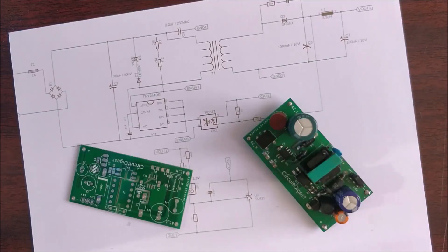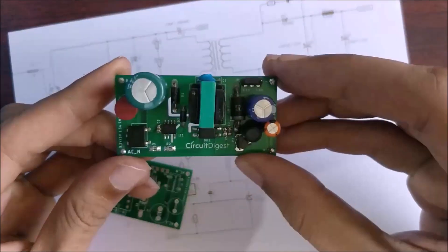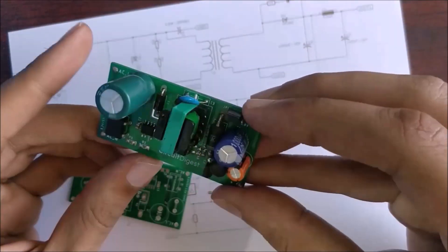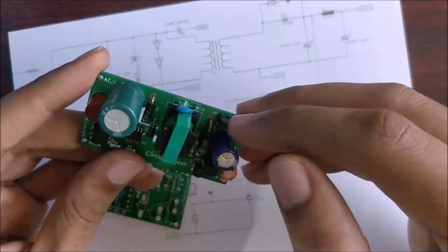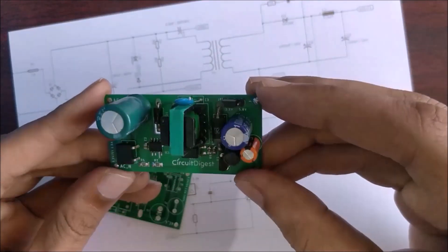Hello and welcome to another video of Circuit Digest. In this video I'll show you how you can build your very own SMPS circuit like this one. This board has an output voltage of 5 volts or 3.3 volts which can be configured using this jumper, and the maximum output current is up to 1.5 amps.